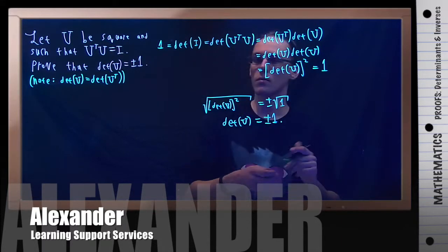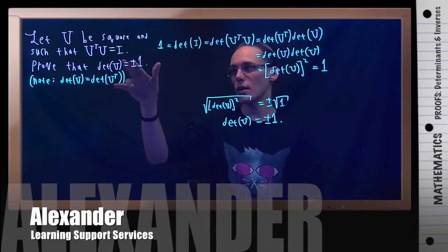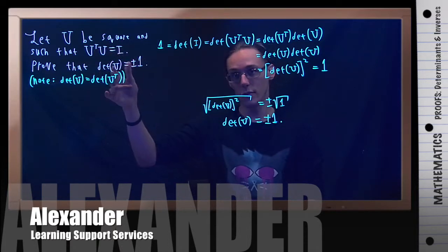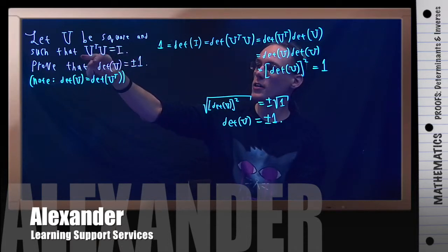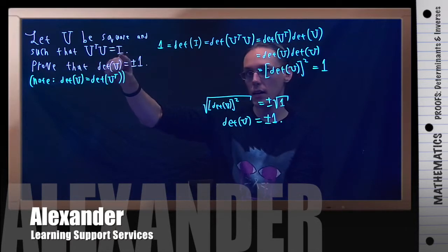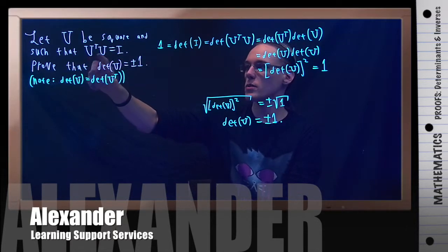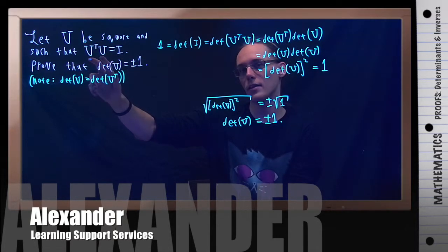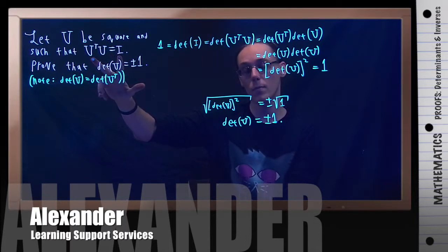There we go. If you have a matrix such that its transpose is its inverse—because that's what this means, U transpose times U equals the identity—then the transpose must be the inverse. That's what an inverse means.